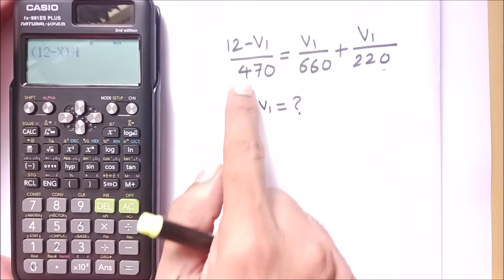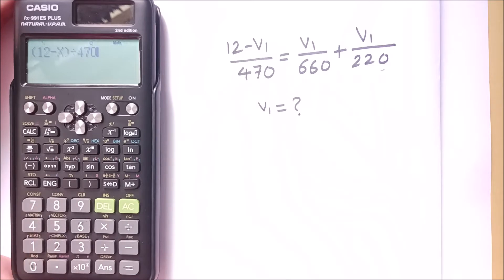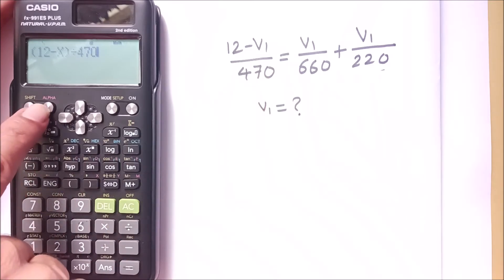Then close the bracket, divided by 470. For the equals sign, I press alpha calc. Then V1 upon 660, which means X upon 660, so alpha X divided by 660.